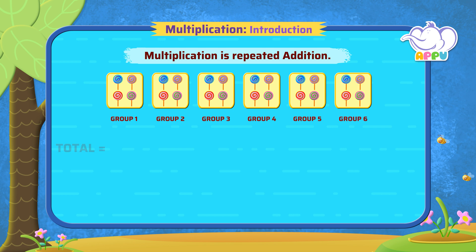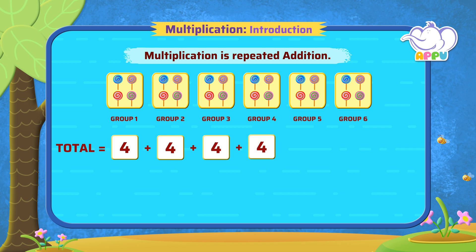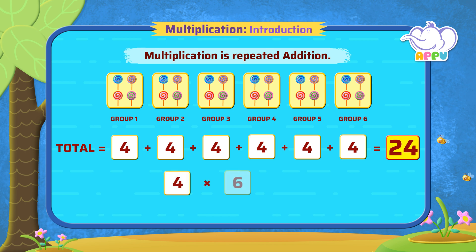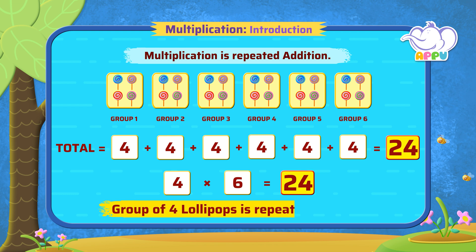So to find the total, we can add four six times: four plus four plus four plus four plus four plus four, which is equal to twenty-four. The easier way to do this is to use multiplication. We write four times six equals twenty-four, because a group of four lollipops is repeated six times.